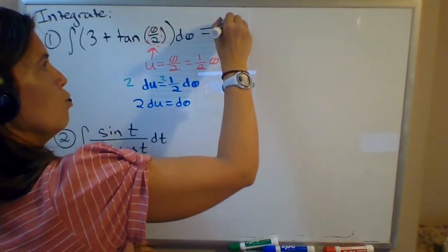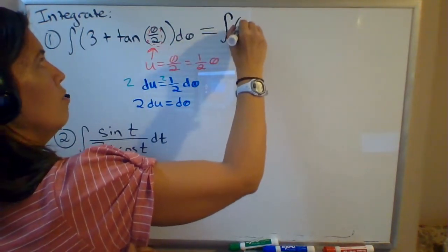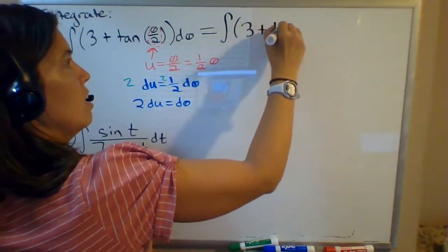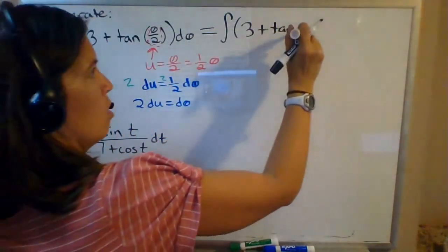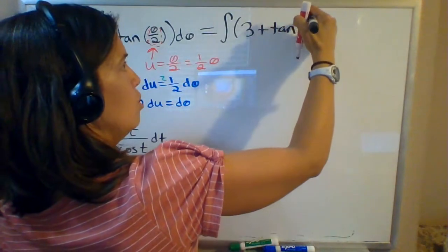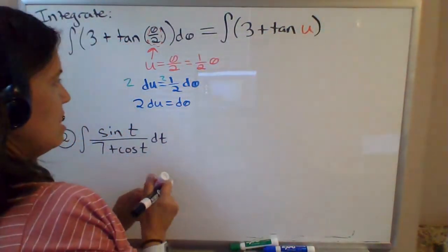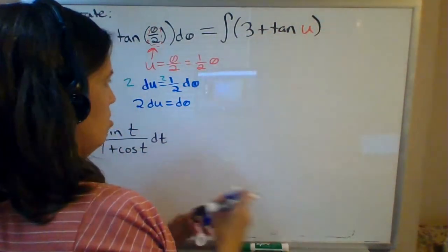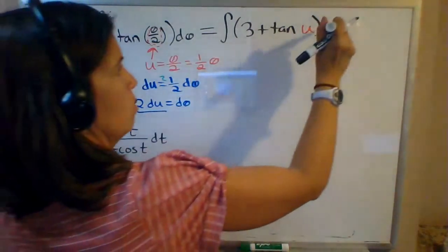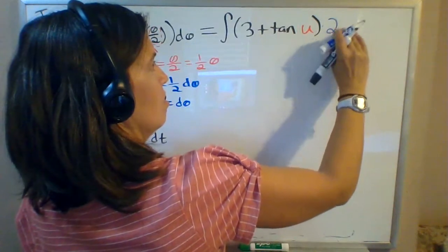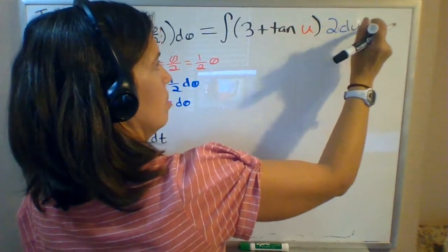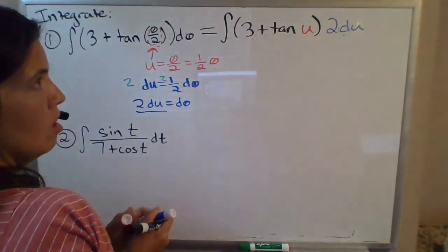Let's write it in terms of u first. So this is the integral of 3 plus tangent of theta over 2, which that's where we're doing our u substitution. So tangent of u times d theta, which is equal to 2 du. Sorry. There.